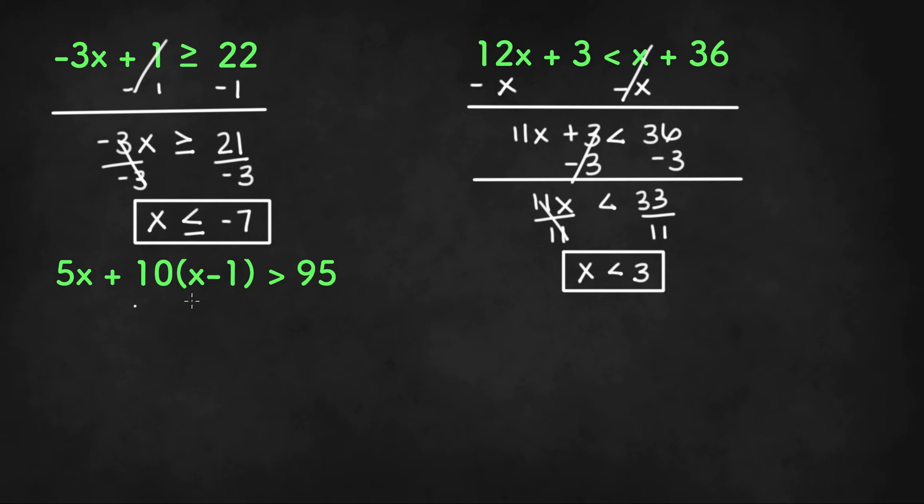Now in our last example we have parentheses, so we're going to be using the distributive property. We have to distribute first. It's the same thing in inequalities just like equations. So we have 5x.